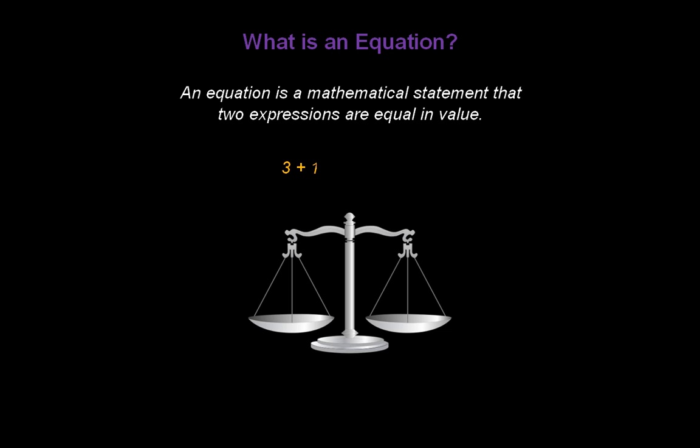Let's say I have 3 plus 12, which I know is 15. And I have an expression 23 minus 8, which I also know is 15. Since 15 equals 15, my two expressions are equal in value, and I can write 3 plus 12 equals 23 minus 8.